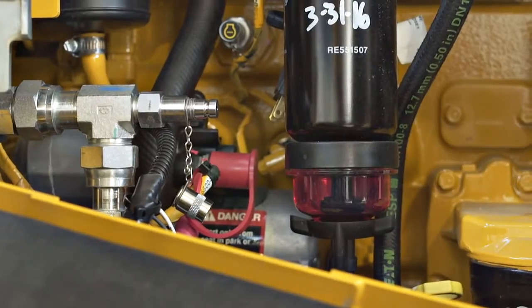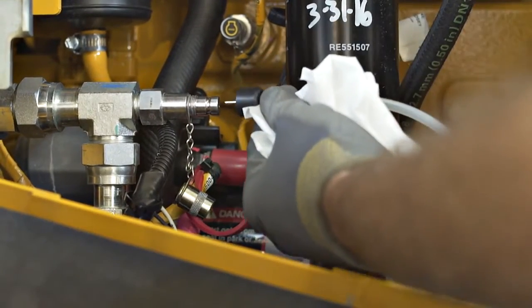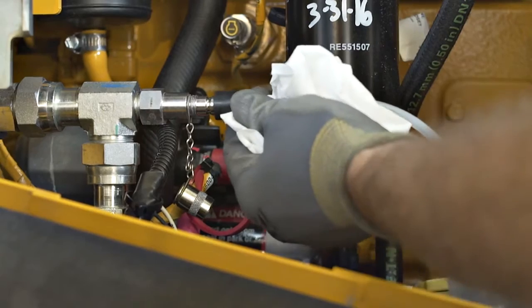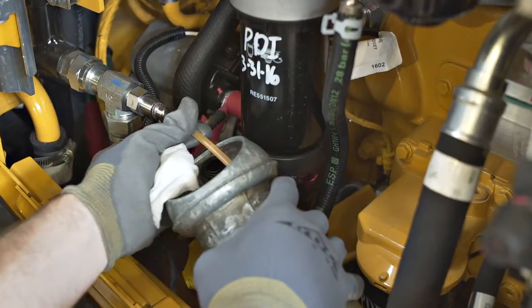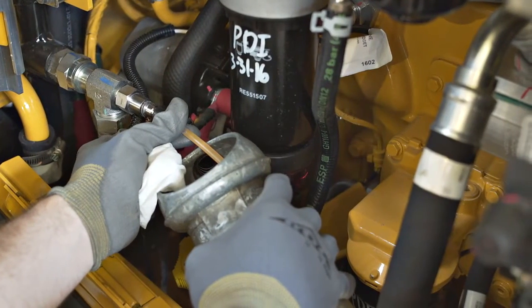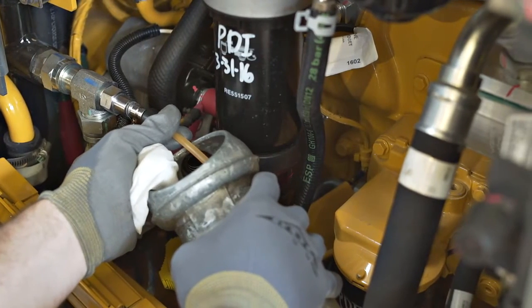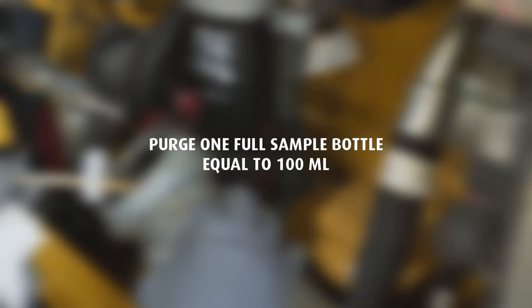Purge oil from the system to ensure a representative sample is collected in a test collection bottle. The appropriate amount of waste oil is determined by the distance of the sampling valve from the flow of the system. It is recommended one full sample bottle, equal to 100 milliliters, is purged from a remotely mounted valve prior to collecting the sample. Properly dispose of collected waste fluid.